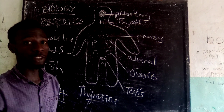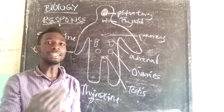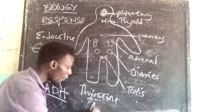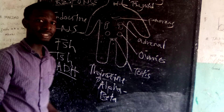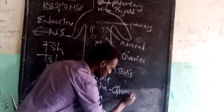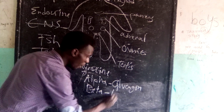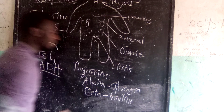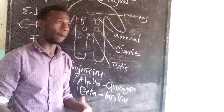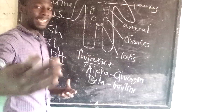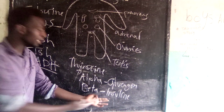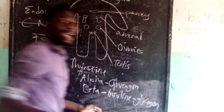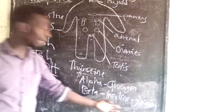The pancreas has a part known as the Islets of Langerhans. The Islets of Langerhans has two cells: we have the alpha cell and the beta cell. The alpha cell produces a hormone known as glucagon, and the beta cell produces a hormone known as insulin. These two hormones work in the opposite way. When you eat and have a high amount of energy, your body will not use all that energy. The excess energy will be converted by insulin into glycogen.